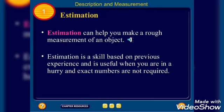Estimations doesn't go there. Estimations are just assumptions. Estimations can help you make a rough measurement. They can give us a rough idea about any object, but they can't be exact. Estimation is a skill based on previous experience and is useful when you are in a hurry and exact numbers are not required.